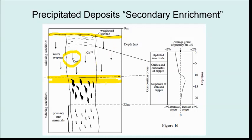Looking at the diagram on the right, we can see the average copper content across depth. There is a decrease in copper at the top surface, showing it has been leached out, and a marked increase in copper at depth. This high degree of copper enrichment corresponds to the water table zone, confirming that precipitation occurs at the water table.